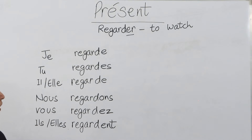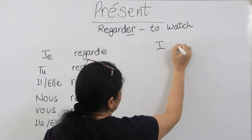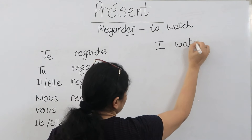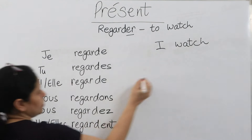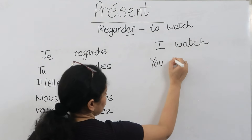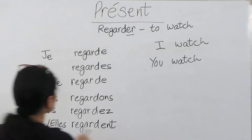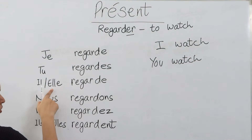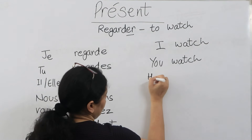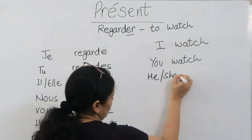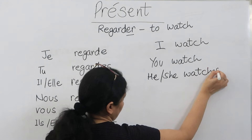'Je regarde' means 'I watch.' 'Tu regardes' means 'you watch.' 'Il regarde' or 'elle regarde' means 'he or she watches.'